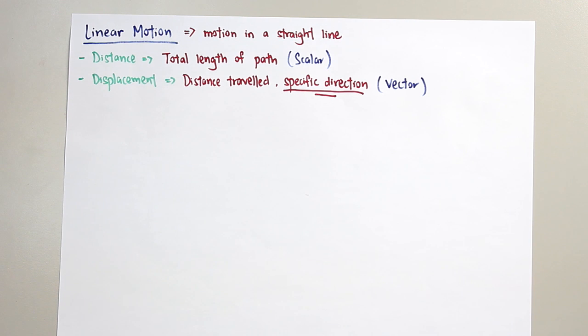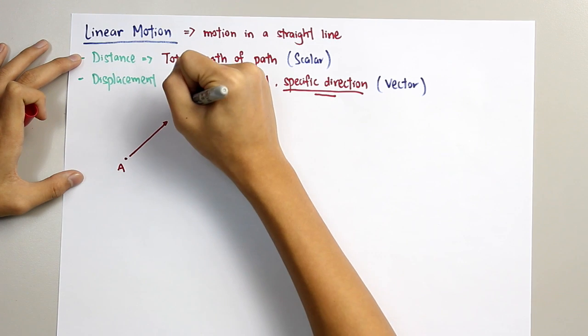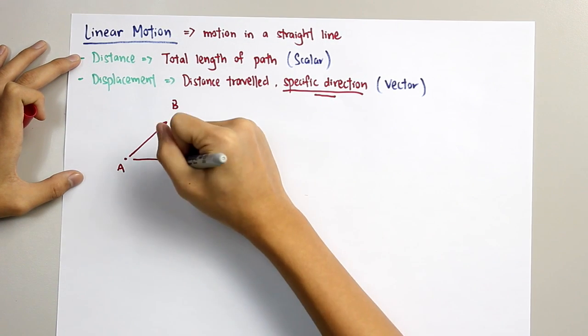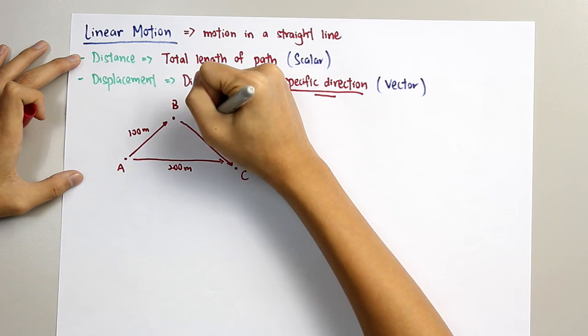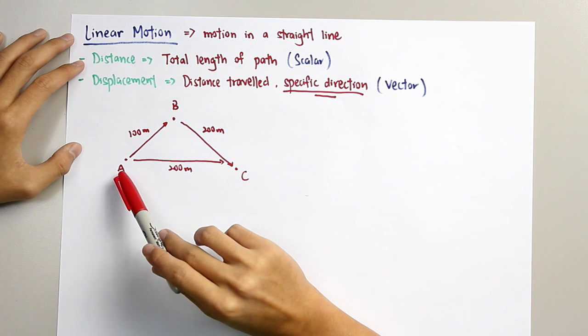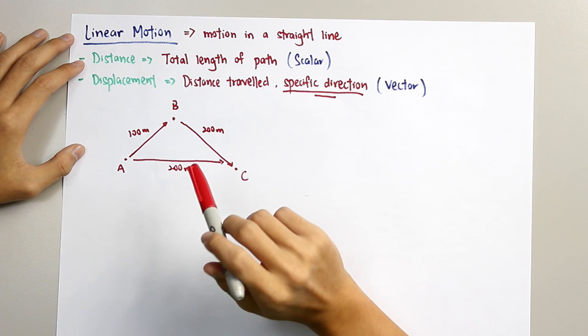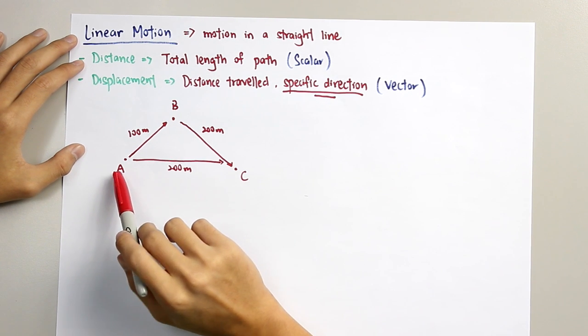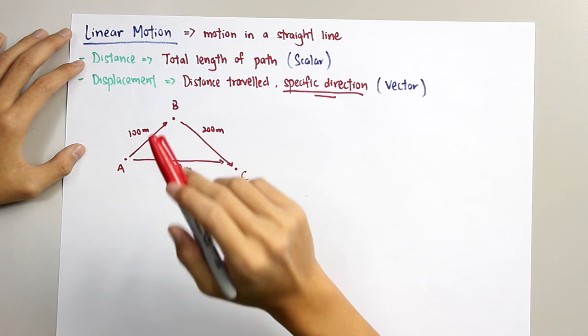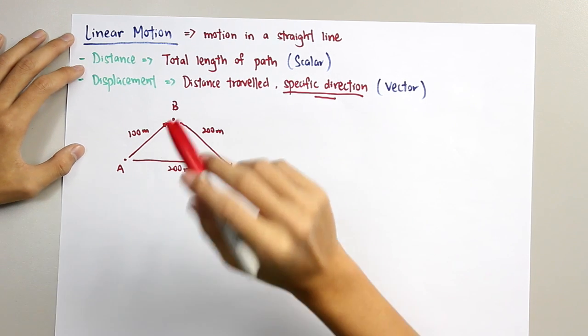Now, I'll show you an example to differentiate distance and displacement. Given city A, city B, and city C, a driver needs to travel from city A to city C. So, the driver takes the route from A to B and B to C.